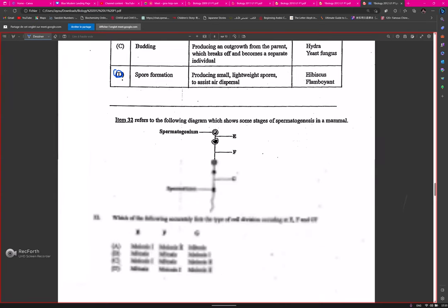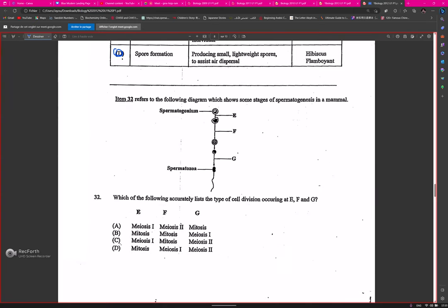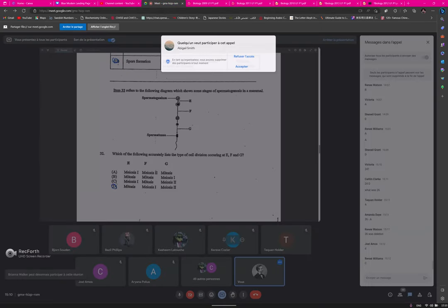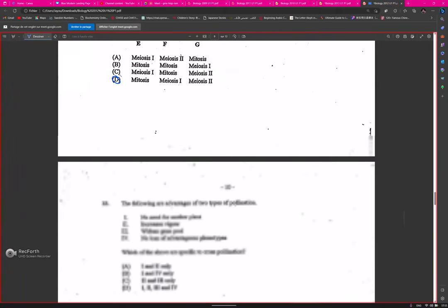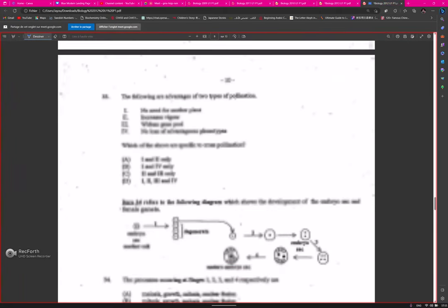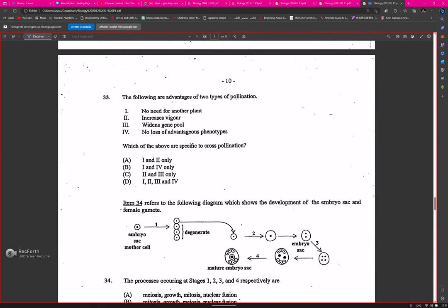Question about hibiscus: spore formation. Which of the following accurately describes the process? We saw this as well. It's going to be mitosis, meiosis one, and meiosis two. The following are advantages of two types of pollination. What is specific to cross-pollination? C, two and three makes sense.